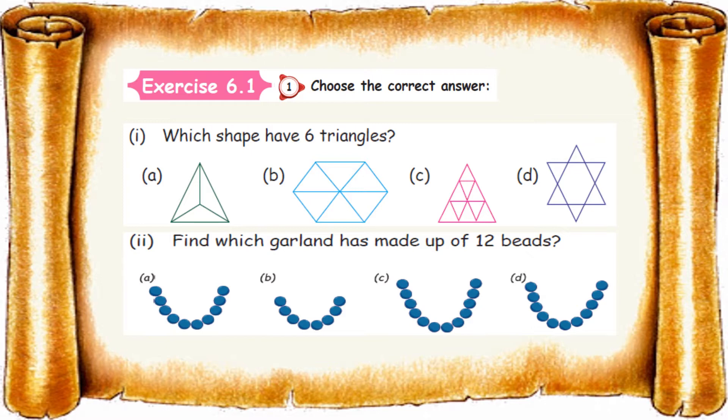We are going to find the triangles only. Let us start. 1, 2, 3, and 4. So overall 4 triangles are there. It is not an answer.